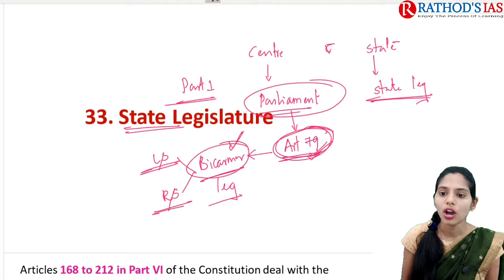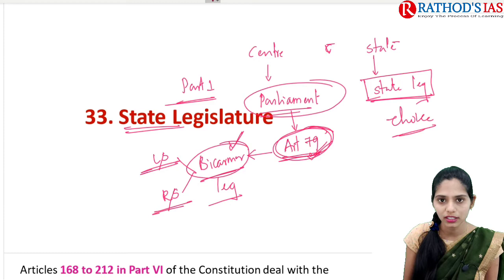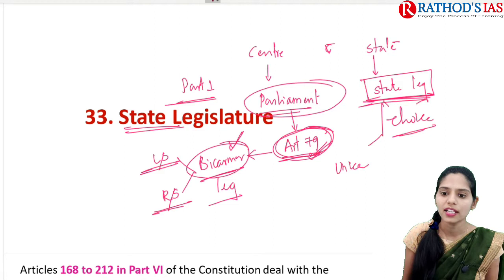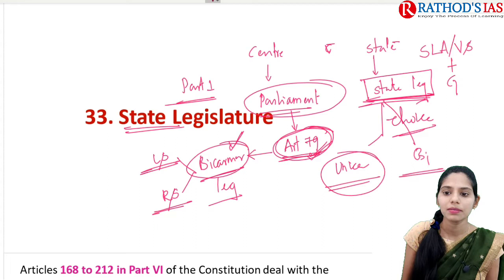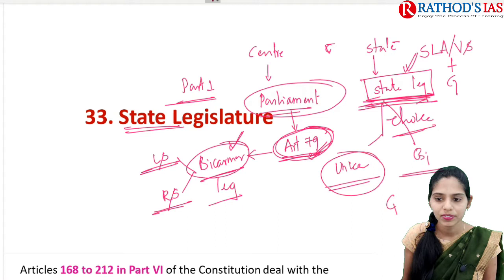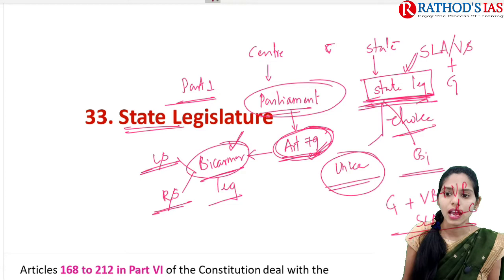If you are talking about the State Legislature, there is some choice given. Some states have Unicameral and some states have Bicameral legislatures. For Unicameral states, the State Legislature mainly contains the State Legislative Assembly — also called Vidhan Sabha — and the Governor. For Bicameral states, the State Legislature contains the Governor, Vidhan Sabha, and also Vidhan Parishad, which is called the Legislative Council.